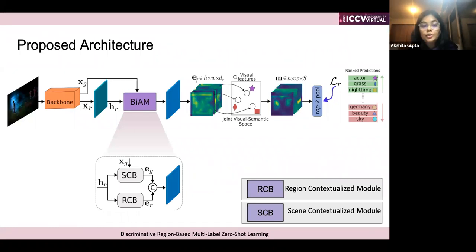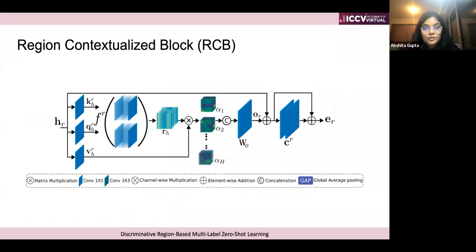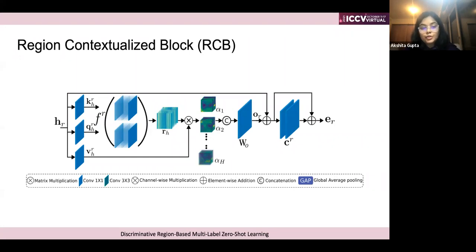Our BiOM module comprises two sub-modules: RCB (Region Contextualized Block) and SCB (Scene Contextualized Block). For RCB, the learned feature from the backbone is passed through a convolution and then through the RCB module. With this module we try to focus on each region of the feature, since we are working on large-scale data with images containing multiple objects — abstract, large, small, every kind.